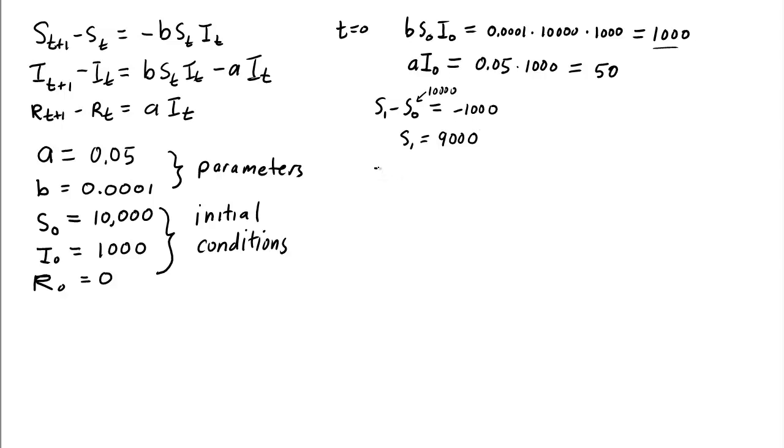How about infectives? Well, I1 minus I0, then the change in the number of infectives. Well, it's B times S sub T times I sub T, right? That's the number of new infectives, which again is 1,000, minus the number that were removed, and that is minus 50. So the change is 950.